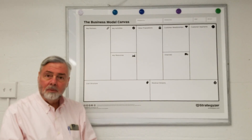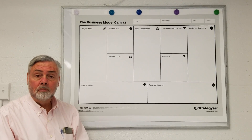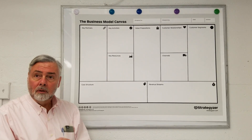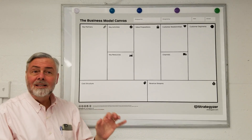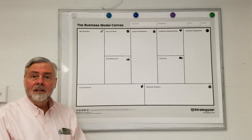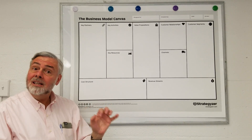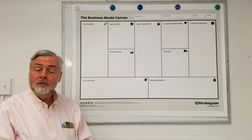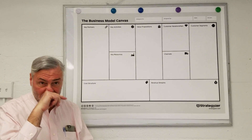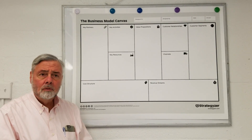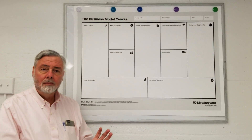Typically start with customer segments. Who are those folks who are the beneficiaries of the product or service that you're going to provide? They should be people, so avoid the temptation to talk about companies. AT&T is not a good customer segment. The CIO at AT&T or a product manager at AT&T — job functions — are the kind of categories of people you should be talking about. You also want to segment your customer segments as best you can, and try to be as precise as possible.